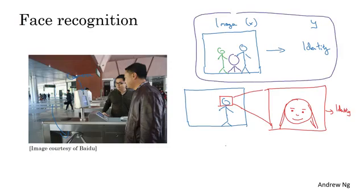And what researchers have found is that instead of trying to learn everything in one step, by breaking this problem down into two simpler steps—first, figure out where is the face, and second, look at the face and figure out who this actually is—this approach allows the learning algorithm or really two learning algorithms to solve two much simpler tasks and results in overall better performance.